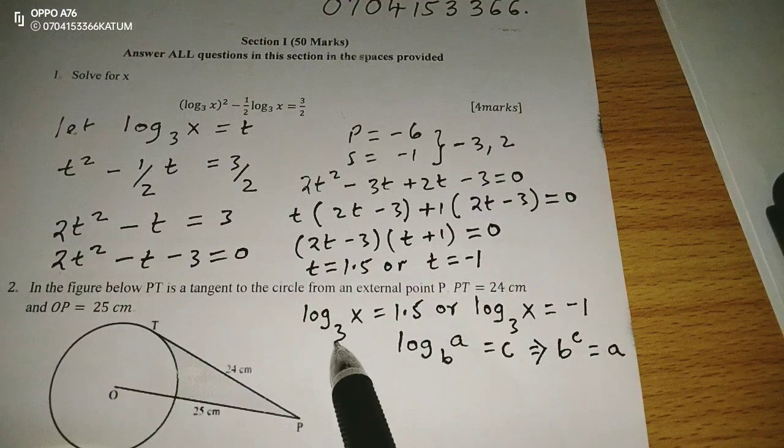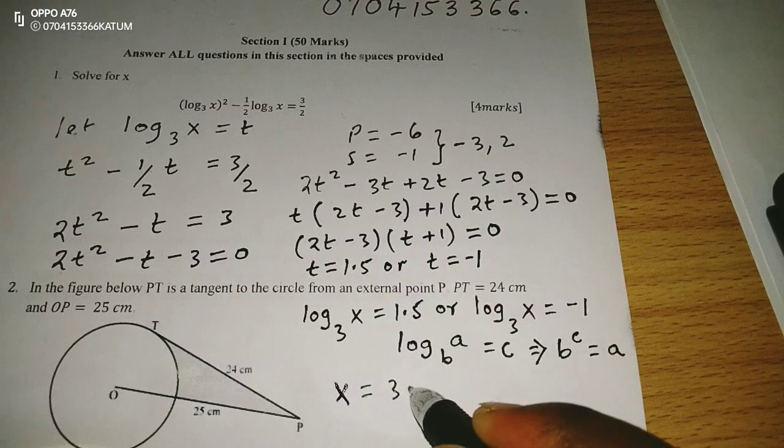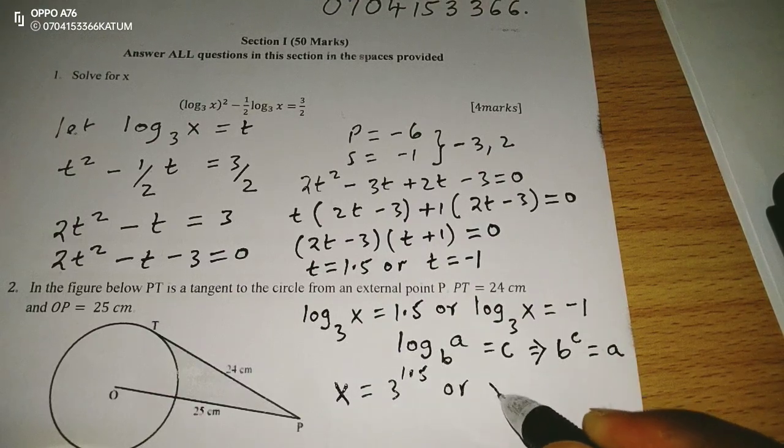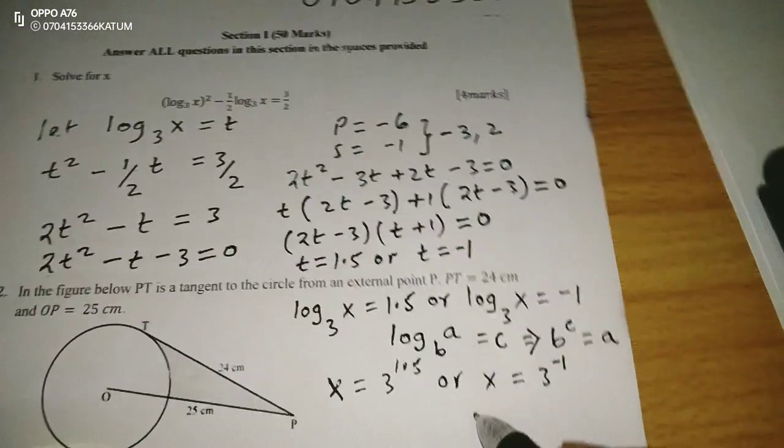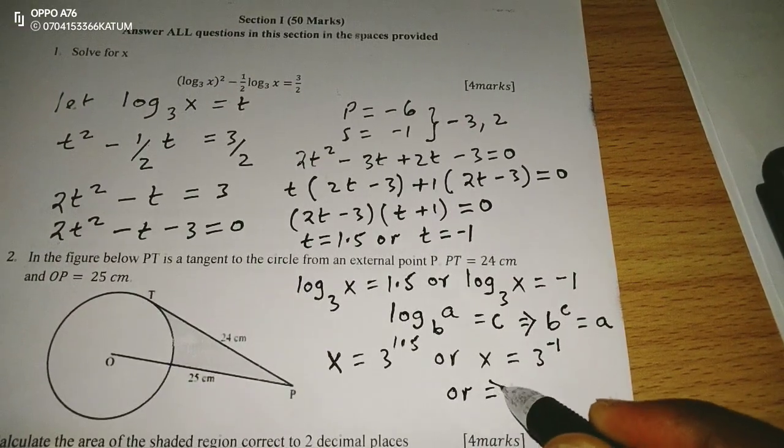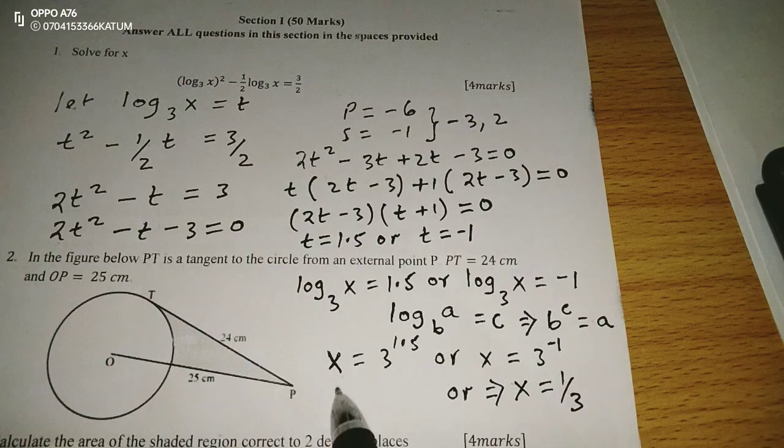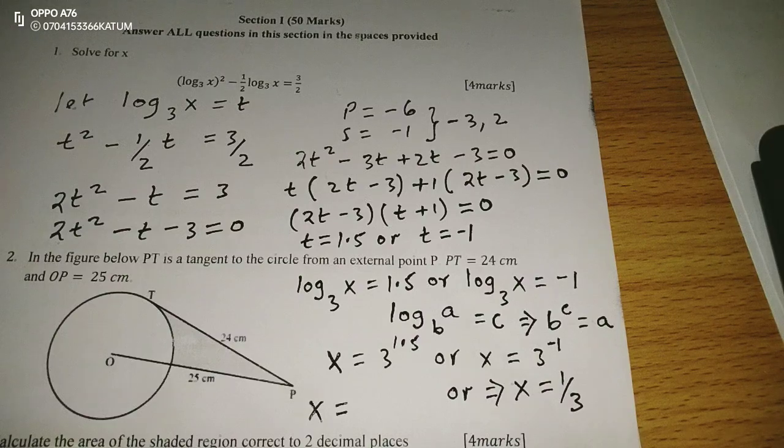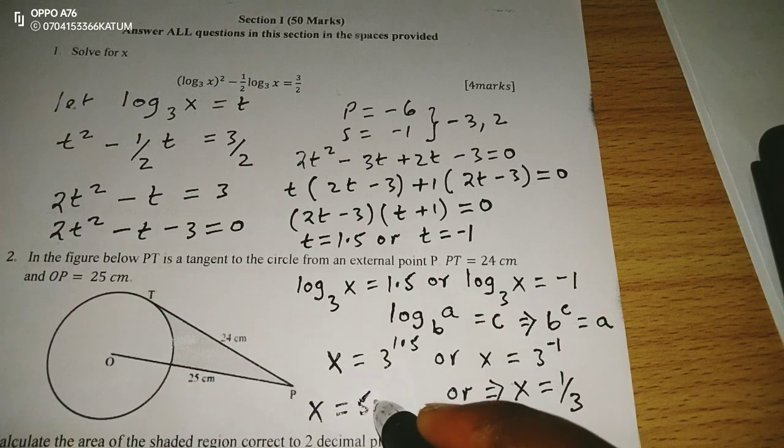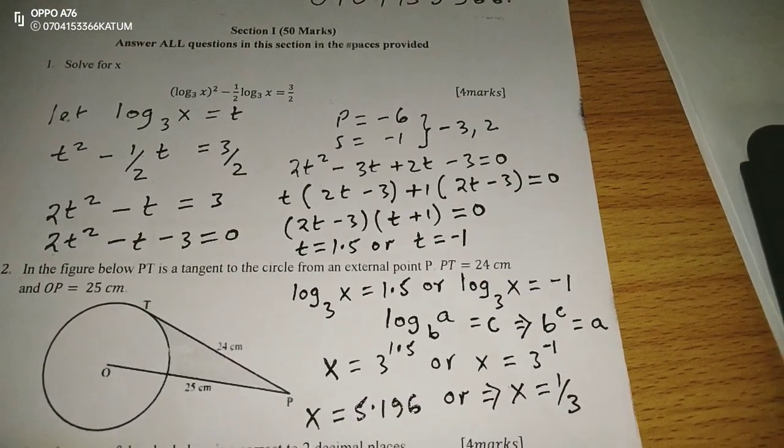Therefore, applying the same here, 3 power 1.5 will give us x. So x equals to 3 power 1.5, or x equals to 3 power negative 1. So when we solve, we will find x is equivalent to 1 out of 3. Or on this side, the value of x is going to be equivalent to 3 raised to 1.5 gives us 5.196 to 4 significant figures. So those are the two values of x.